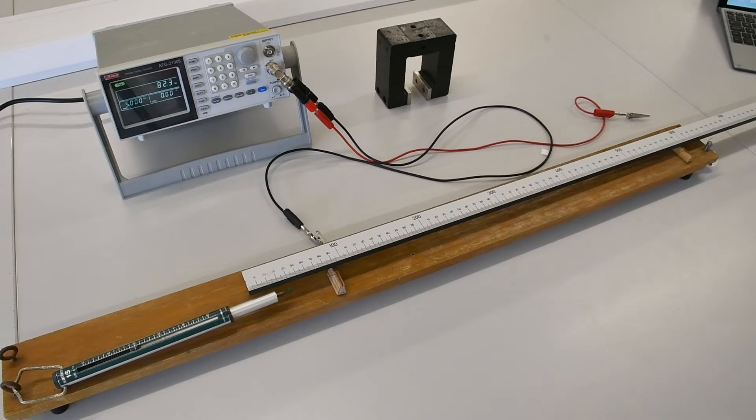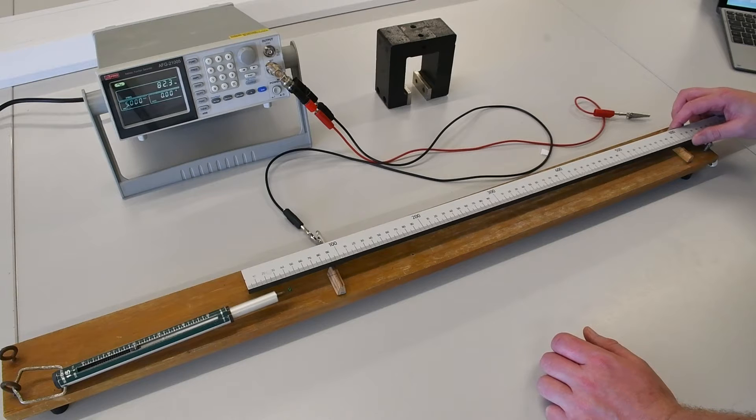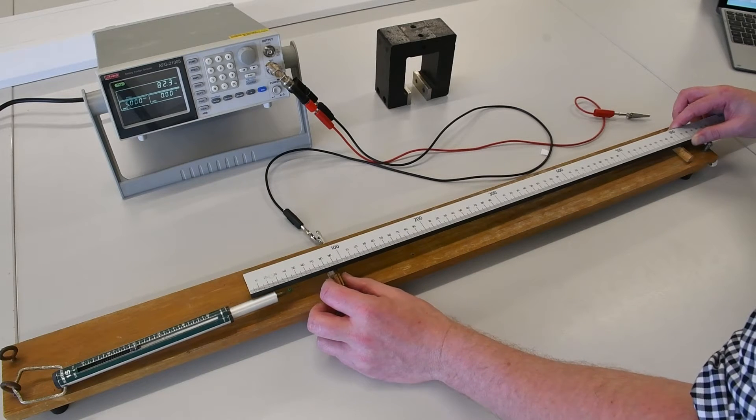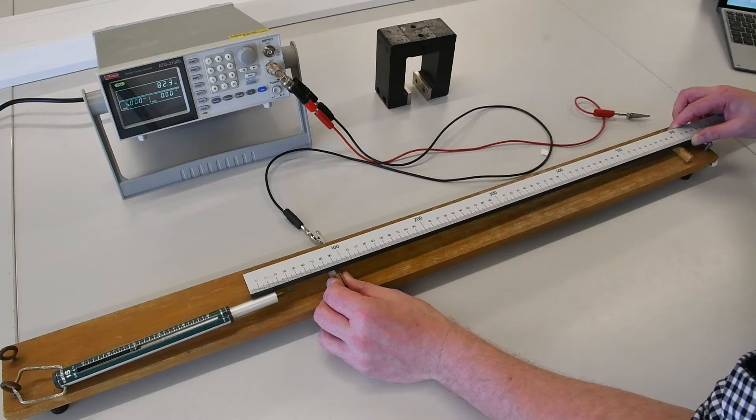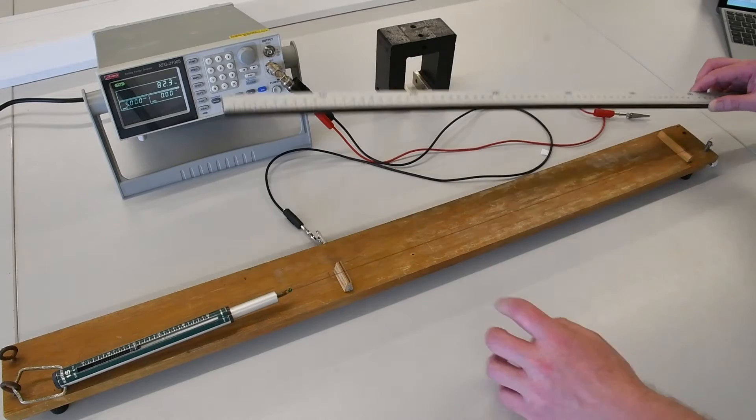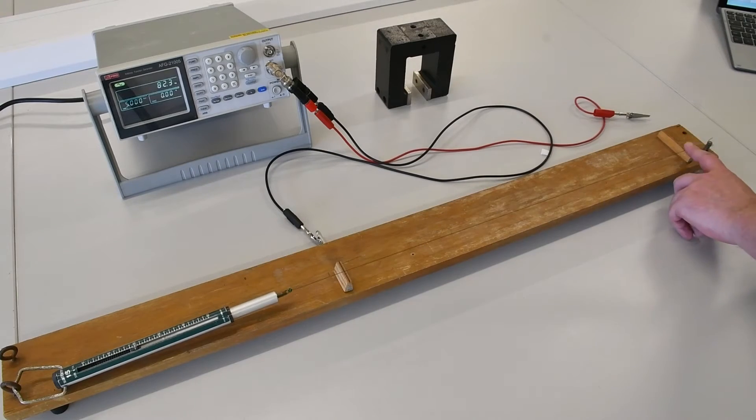Next, we have to set the length of our string. So for my first measurement, I'd like the length to be 50 centimeters. So I'm placing the end of the meter stick on the fixed bridge, and I'm going to gradually move the moveable bridge until I've got a string length of 50 centimeters from this point to this point.